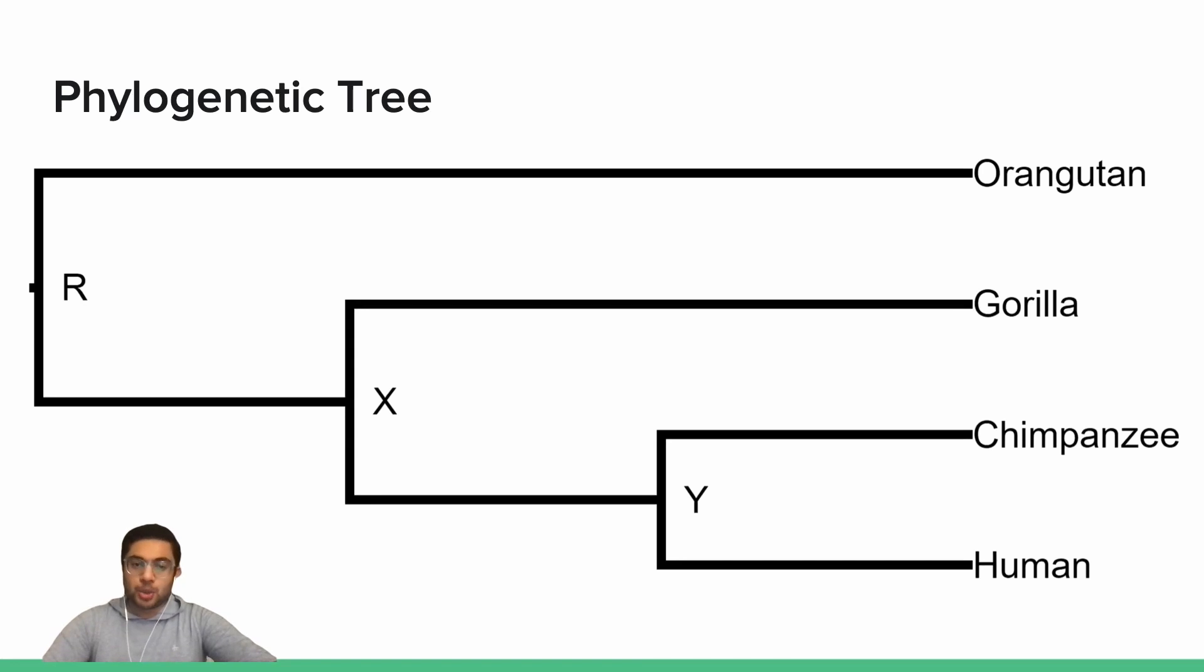A phylogenetic tree is a diagram showing how present-day species are evolutionarily related. Before we can uncover the secrets of the phylogenetic tree, we need to understand the concept of a tree data structure, which demands an understanding of the graph abstract data type.